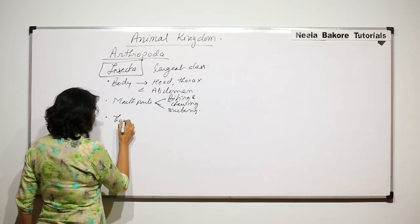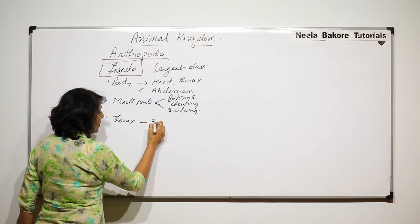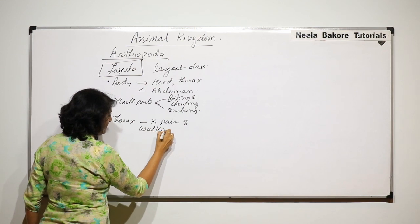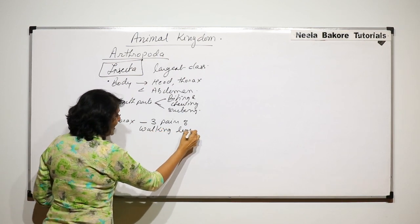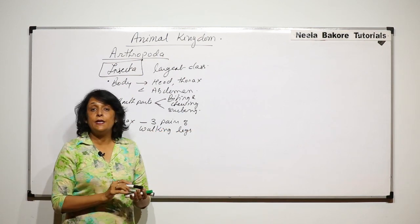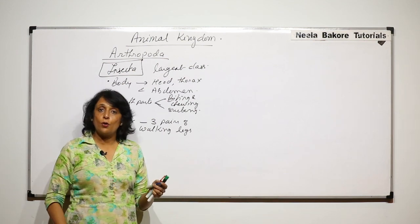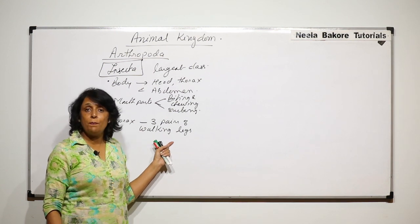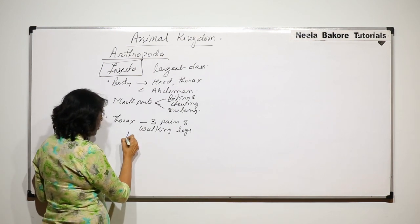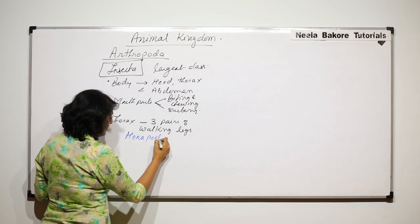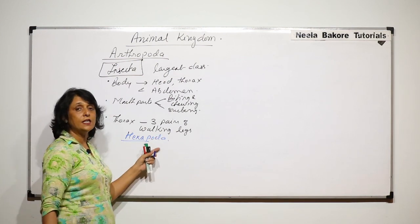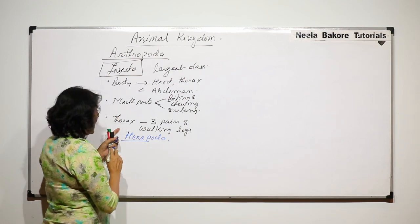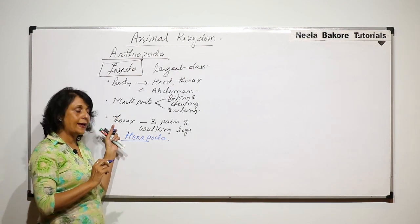The thorax has three pairs of walking legs and these legs are jointed, meaning they are made up of various pieces jointed together. Since the number is six, they are also called Hexapoda — hexa meaning six and poda meaning legs. These three pairs of walking legs are located in the thoracic region.